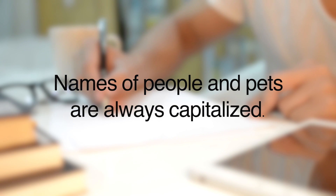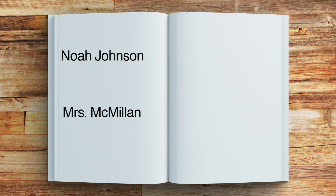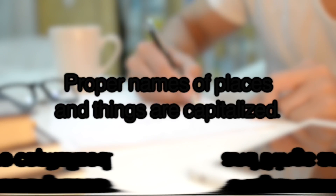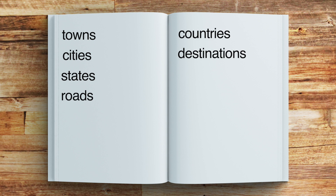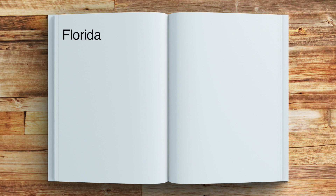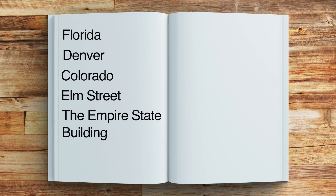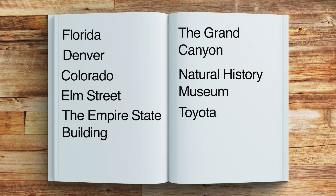Rule number three: proper nouns are always capitalized. This includes names of countries, destinations, buildings, companies, and more. For example: Florida, Denver, Colorado, Elm Street, the Empire State Building, the Grand Canyon, Natural History Museum, Toyota, Nintendo.